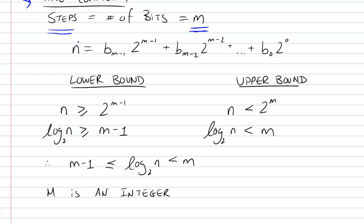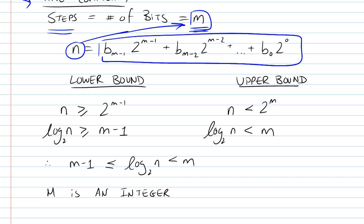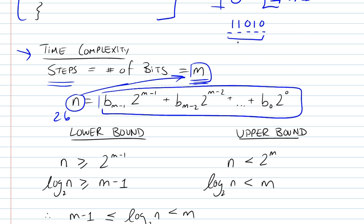So let's assume that n was our number, and the number of bits that n required to be represented in binary is m. So basically this would be its representation, where, for example, if n was 26, and we saw up there that the representation is 1, 1, 0, 1, 0.